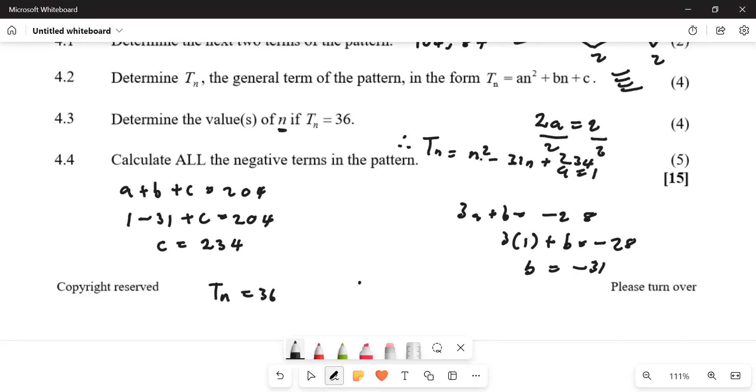So Tn is equal to n squared minus 31n plus 234. So when Tn is substituted as 36, you get 36 equals to n squared minus 31n plus 234.